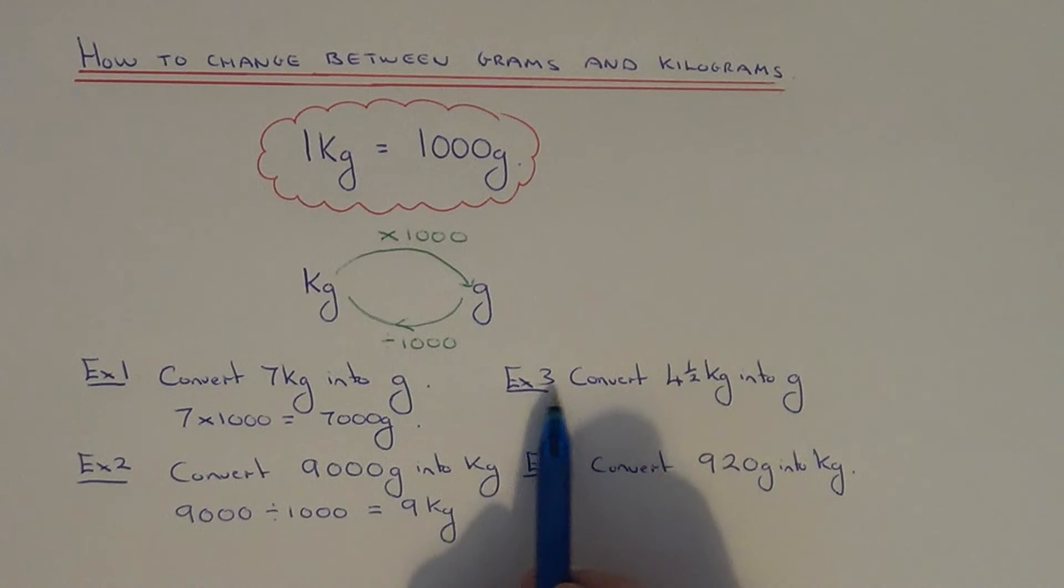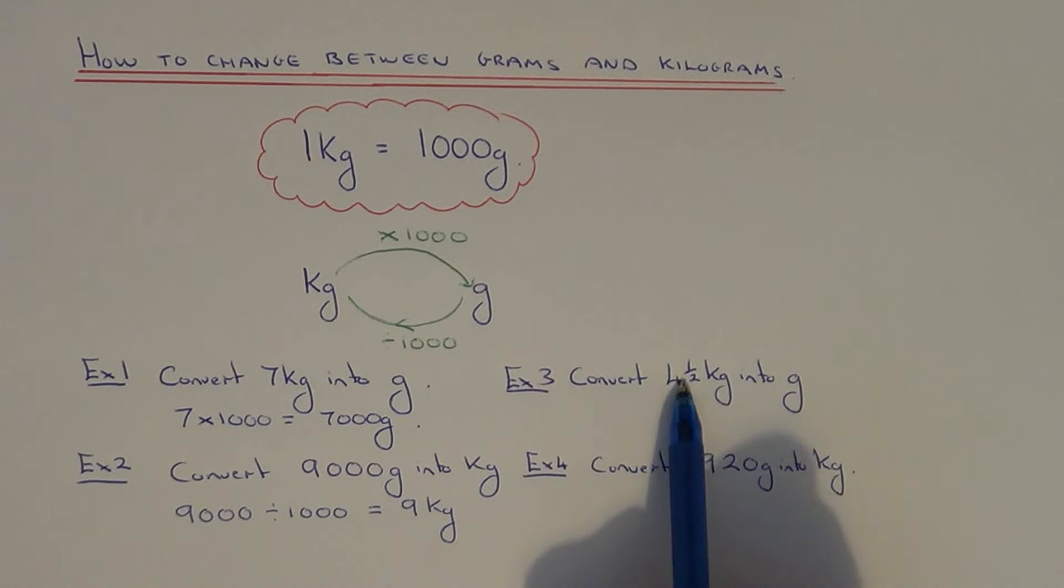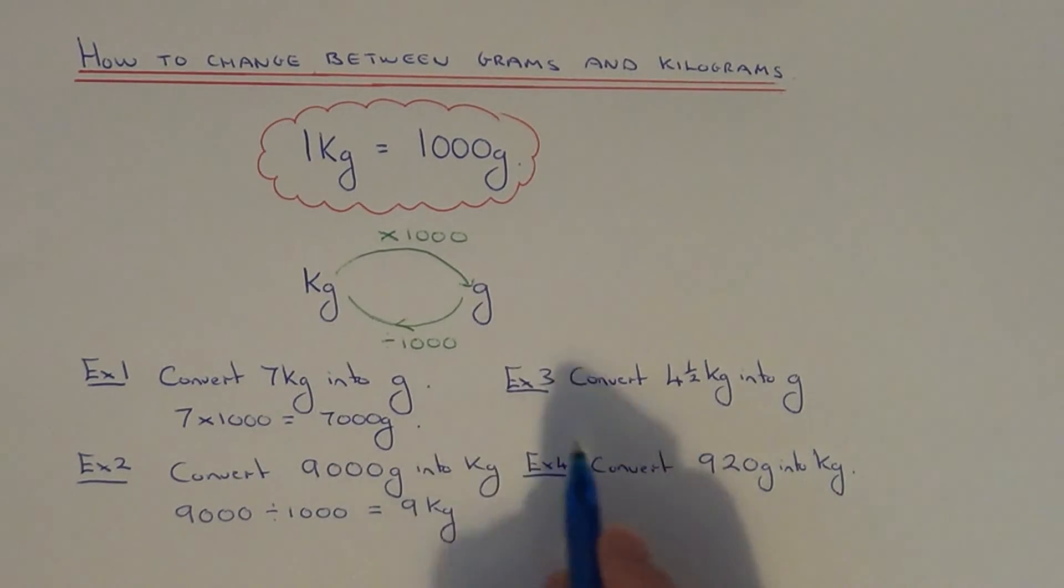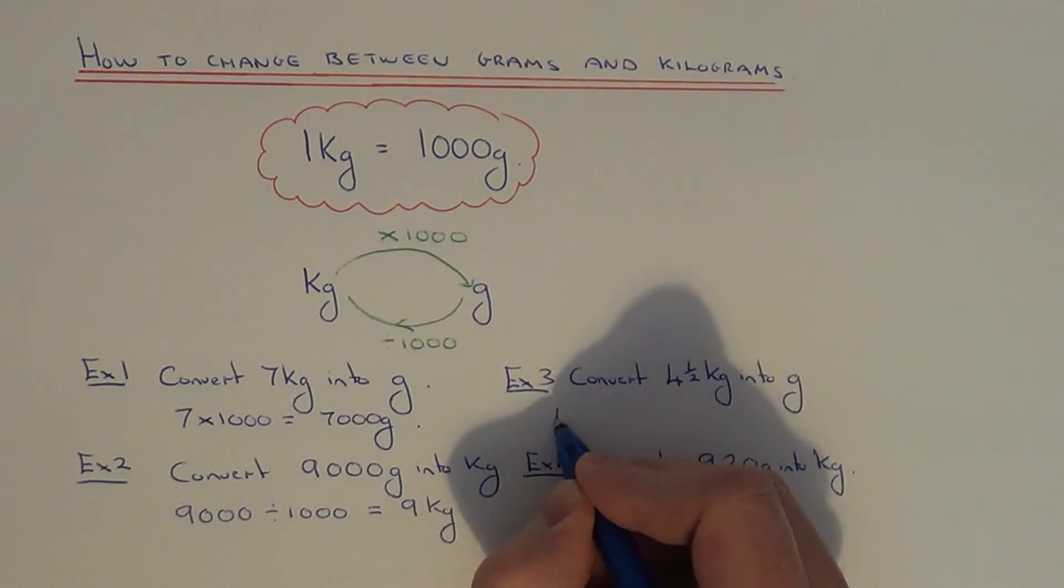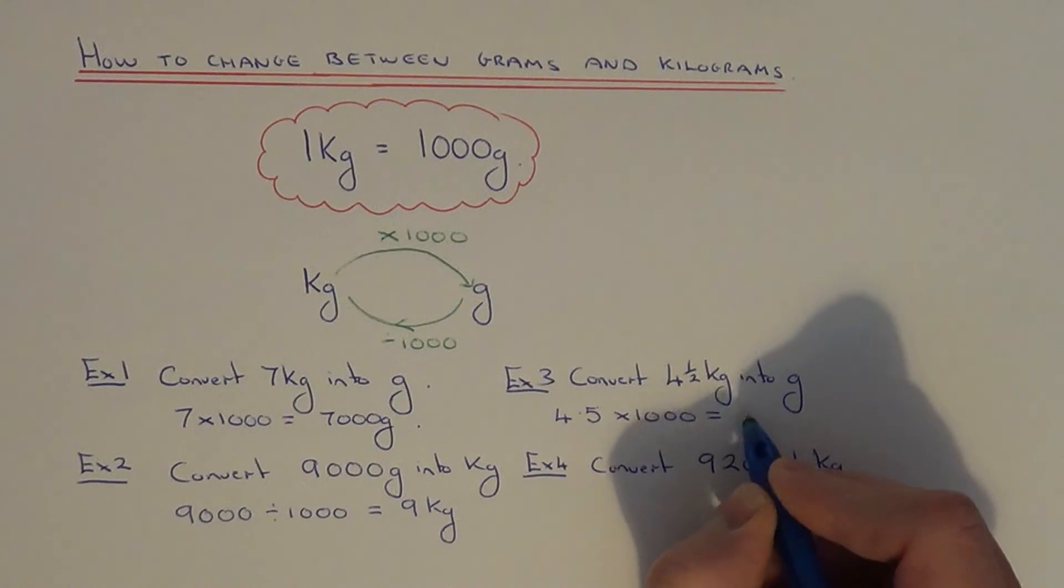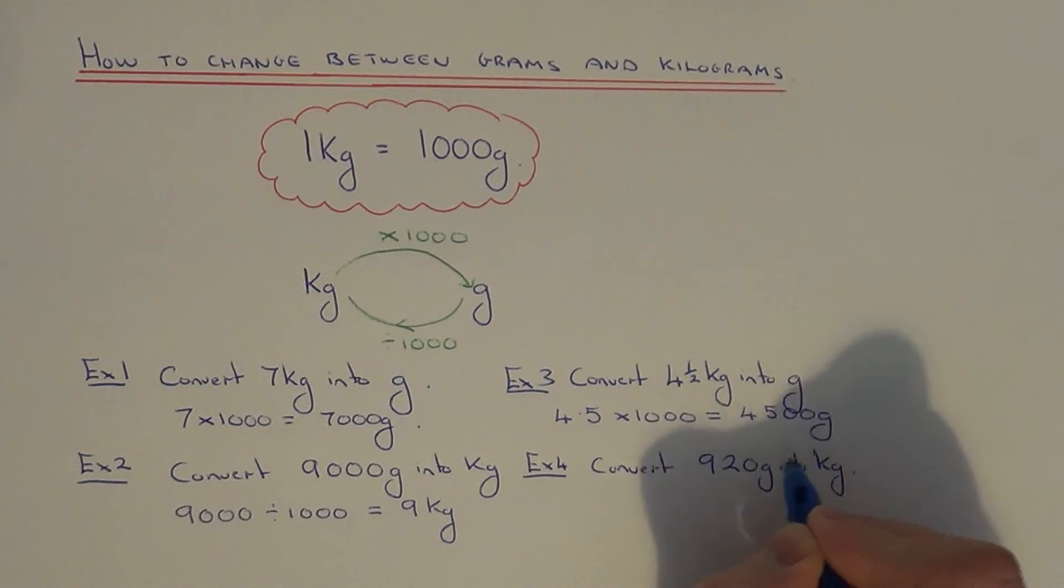Let's move on to example three. This time we've got to convert four and a half kilograms into grams. Kilograms into grams, it's bigger in grams, so we times by a thousand. We need to do four and a half, which is the same as four point five times a thousand. That will give us four thousand five hundred grams.